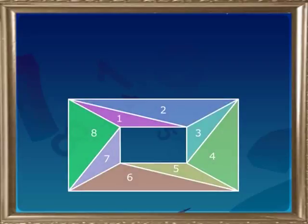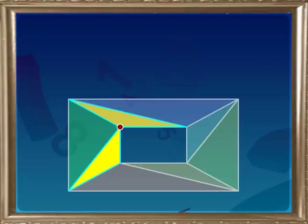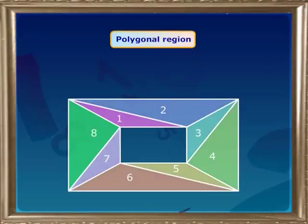Yes, we can divide the given polygonal region into eight triangular regions. As shown in the figure. Good. Therefore, the shaded region is divided into eight triangular regions. And also, the intersection of these triangles is either a point or a line segment. Therefore, the shaded region is a polygonal region.